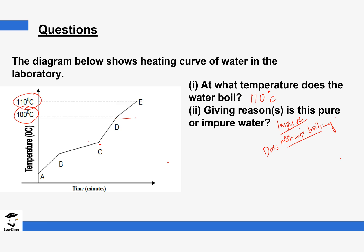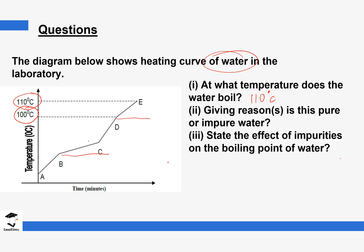We should mention the boiling point here since we are starting with liquid. The next question: state the effects of impurities on the boiling point of water. As you can see from the diagram, the boiling point increases. So we say that impurities increase the boiling point of water.